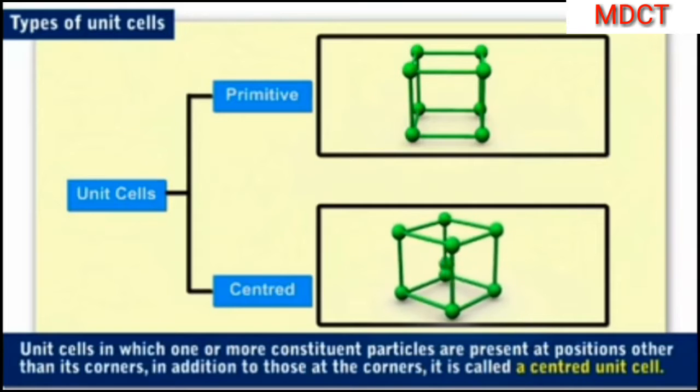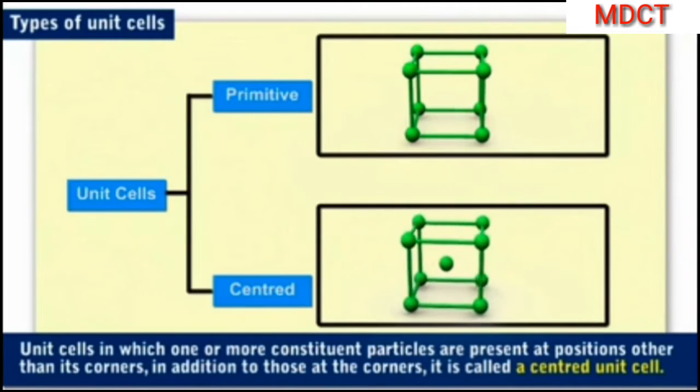Unit cells in which one or more constituent particles are present at positions other than its corners, in addition to those at the corners, are called centered unit cells.